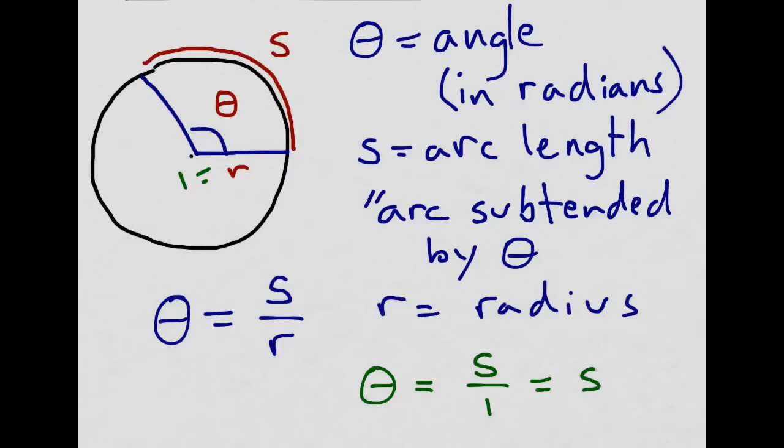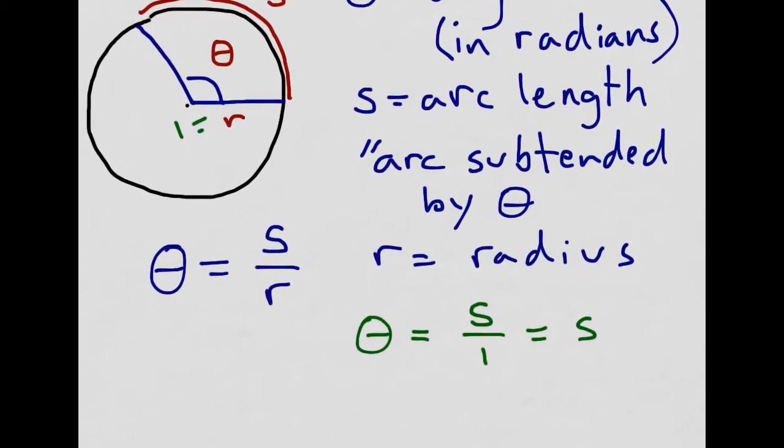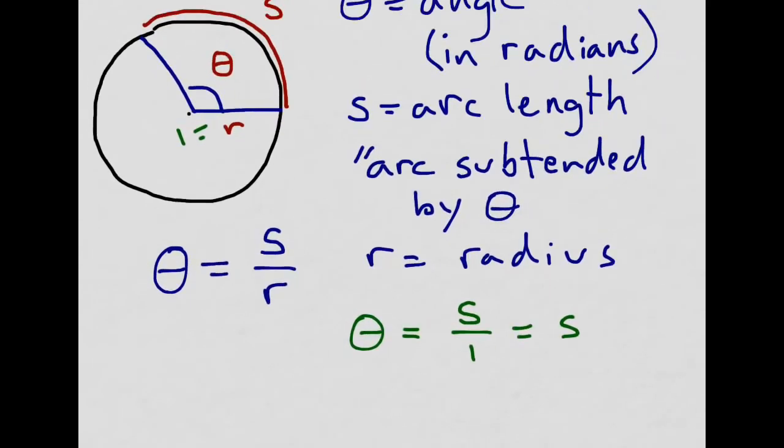For other circles, if the radius is anything other than 1, the arc length is going to be longer, but it's exactly longer based on the size of the radius. So we can take this formula and think of it in this form, or if we multiply both sides by r,